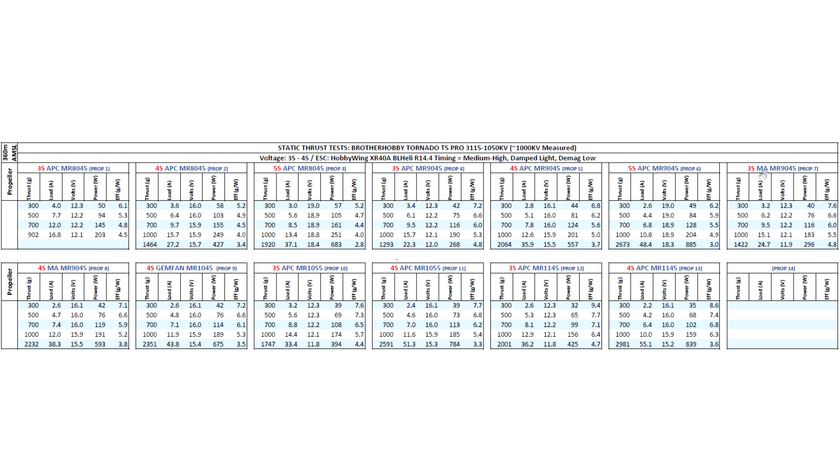Then on to the Master Airscrew MR9045. This prop actually performs quite well on the thrust stand, but from what I hear, it's a pain in the neck to use it because they don't provide adapters, prop adapters for the hub. A lot of people don't recommend it. And also don't know if it maintains that performance in flight. It looks a little bit flexy. So if anybody has used this 9045 or 1045 from Master Airscrew, I'd like to see those comments.